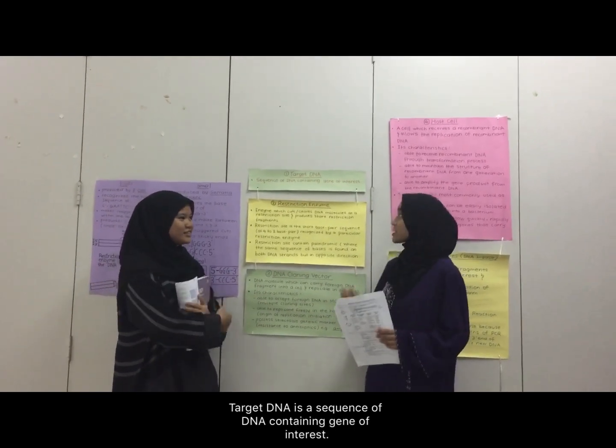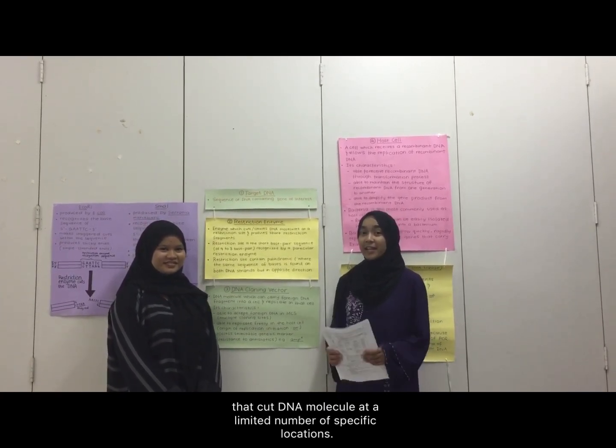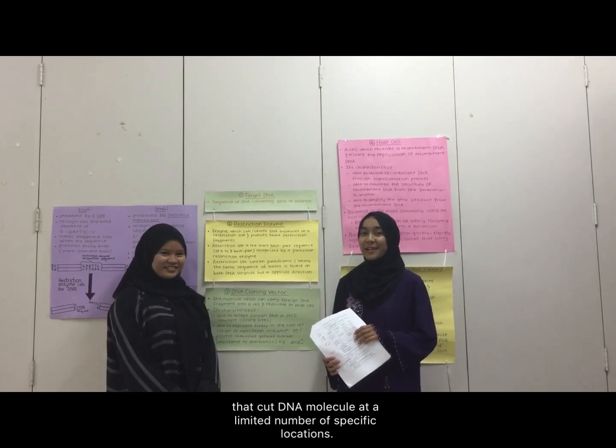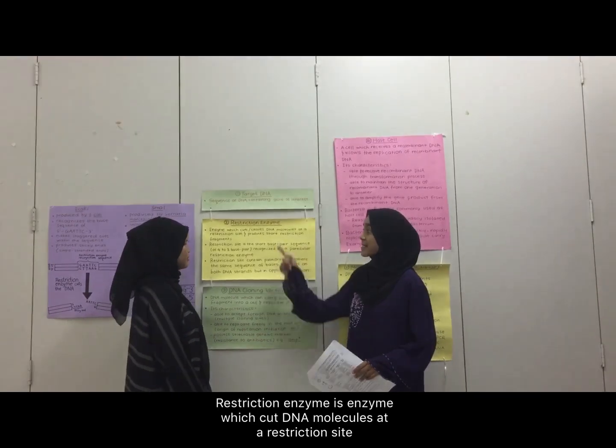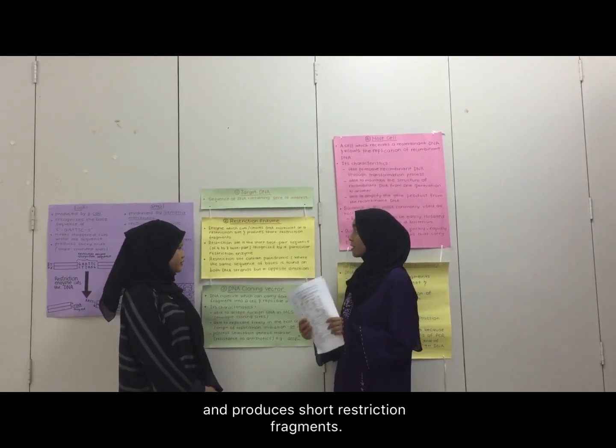There are five tools used in recombinant DNA technology. The first tool is target DNA. Target DNA is a sequence of DNA containing genes of interest. Gene cloning and genetic engineering generally rely on the use of enzymes that cut DNA molecules at a limited number of specific locations. These enzymes are called restriction enzymes or restriction endonucleases. Restriction enzyme is an enzyme which cuts DNA molecules at a restriction site and produces short restriction fragments.